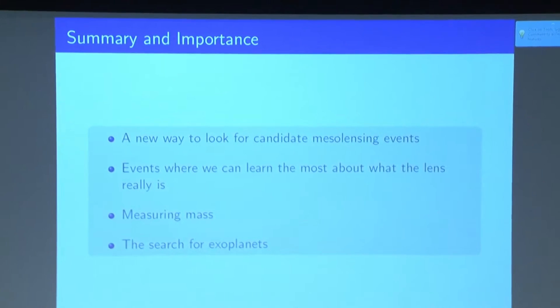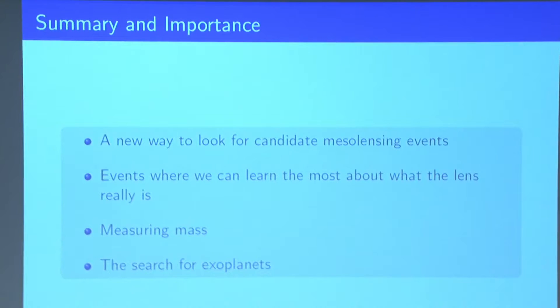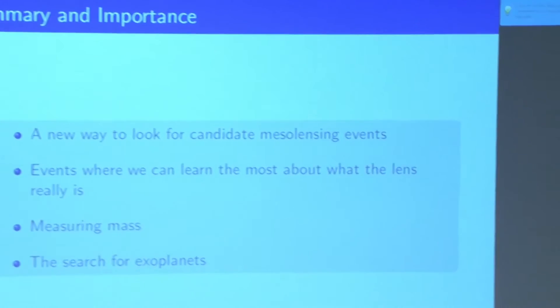So basically, this project was a new way of looking for candidate mesolensing events, which are important because these are the events that we can learn the most details about, and we can study the most characteristics of the lens. We can measure the mass, and we can search for other exciting things like exoplanets.